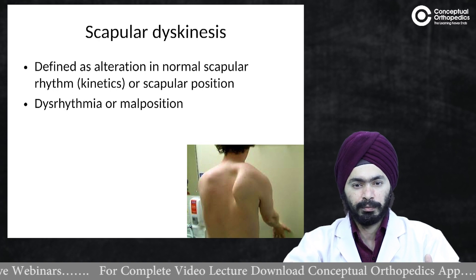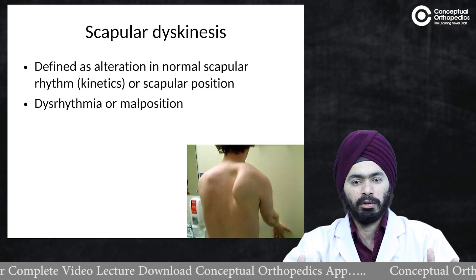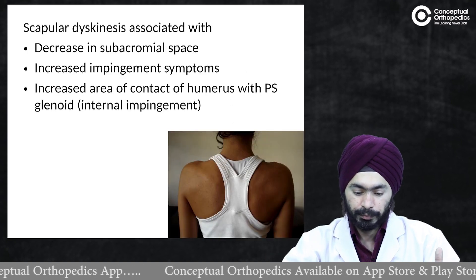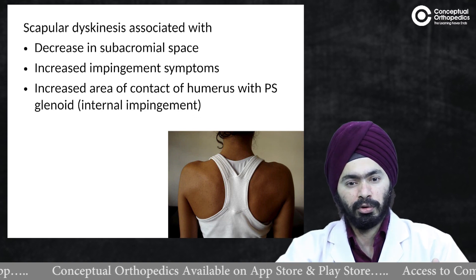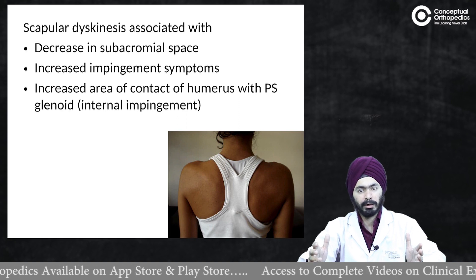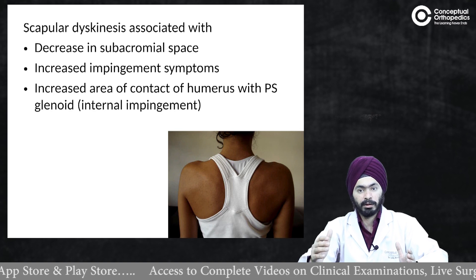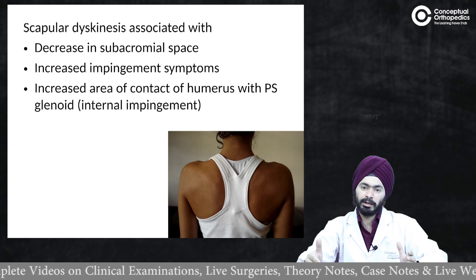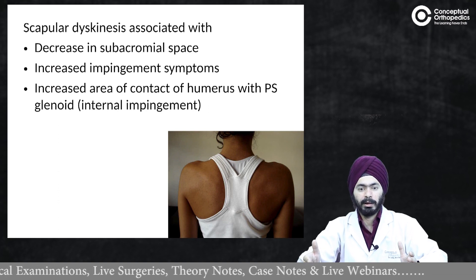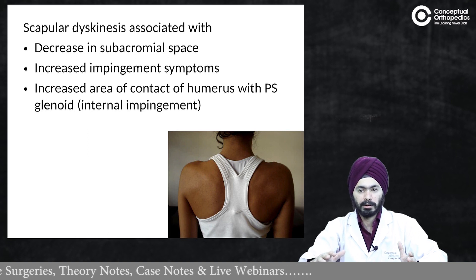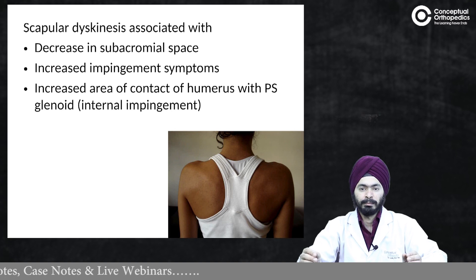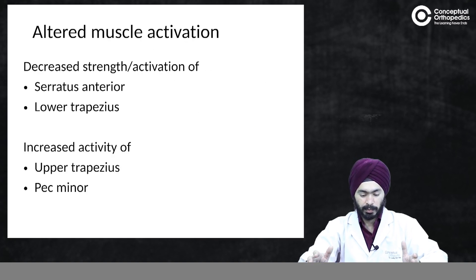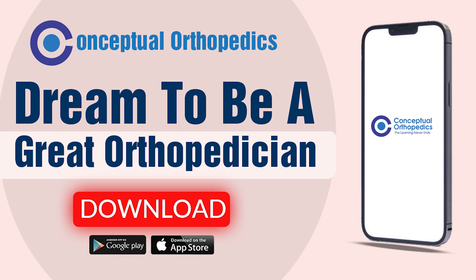Scapular dyskinesis is defined as an alteration in normal scapular rhythm or position — essentially a dysrhythmia or malposition of the scapula. It is associated with various biomechanical problems, including decreased subacromial space, which leads to impingement of the rotator cuff and shoulder pain. Additionally, there may be an increased area of contact of the humerus with the posterosuperior glenoid — what we call internal impingement. Both external and internal impingement may be increased in patients with scapular dyskinesis.